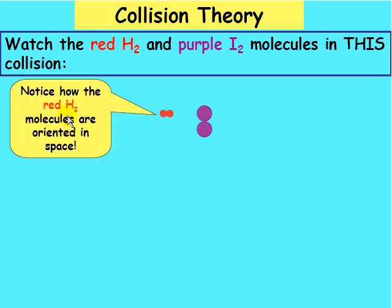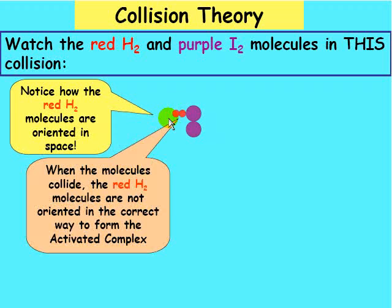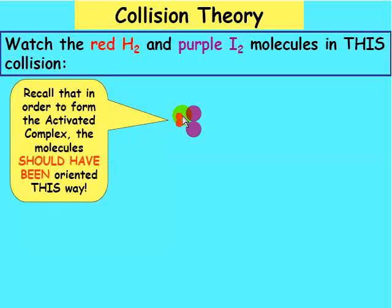Notice how the red H2 molecules are oriented in space, like that. When the molecules collide, the red H2 molecules are not oriented in the correct way to form the activated complex. They're not lined up the right way. Recall that in order to form the activated complex, they should have been oriented this way, so each H can hit an I.